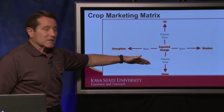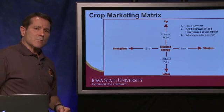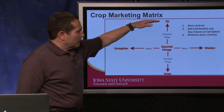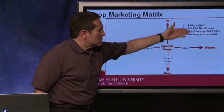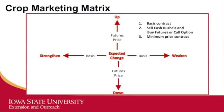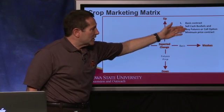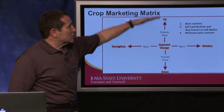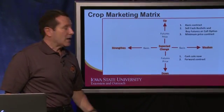Depending on your expected change, pick the marketing tool that best fits. To take advantage of futures prices that will later increase but where basis will weaken, contracts such as a basis contract — sell cash bushels and buy futures, or sell cash bushels and buy a call option — or perhaps a minimum price contract through an elevator, a co-op, or another grain merchandiser would be an opportunity.